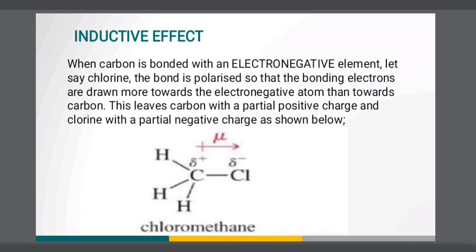When carbon is bonded with an electronegative element, let's say chlorine, the bond is polarized so that the bonding electrons are drawn more towards the electronegative atom than towards carbon. This leaves carbon with a partial positive charge and chlorine with a partial negative charge as shown below. An arrow is used to indicate the direction of polarity as seen above.